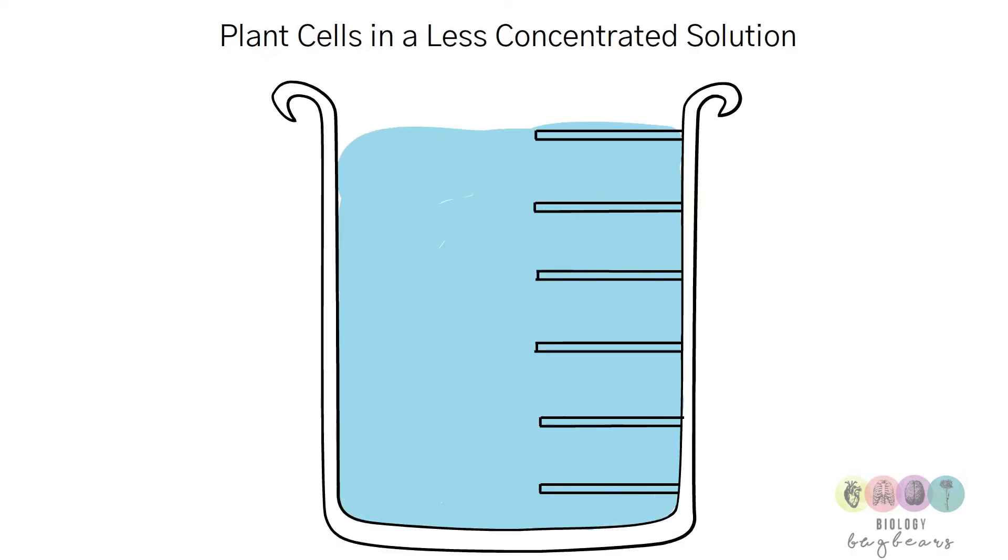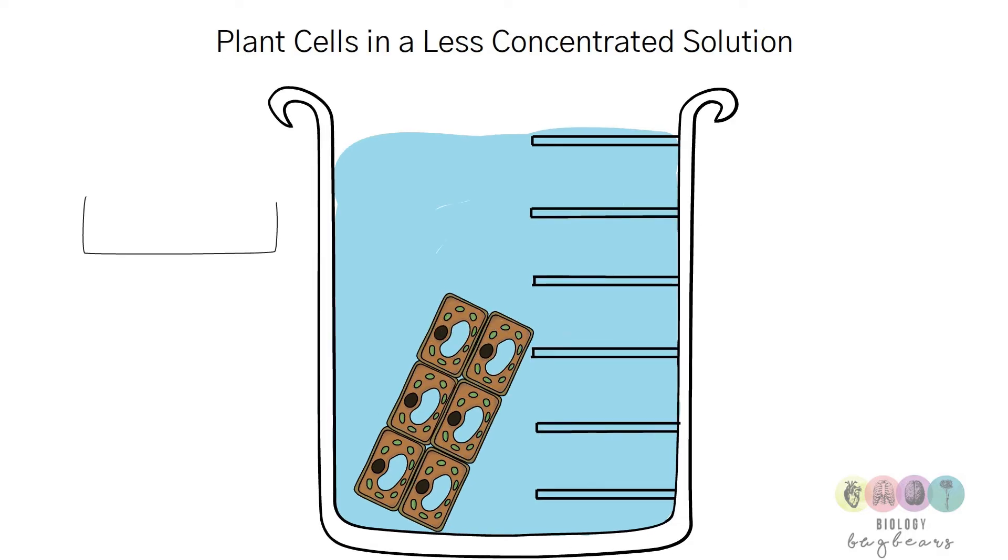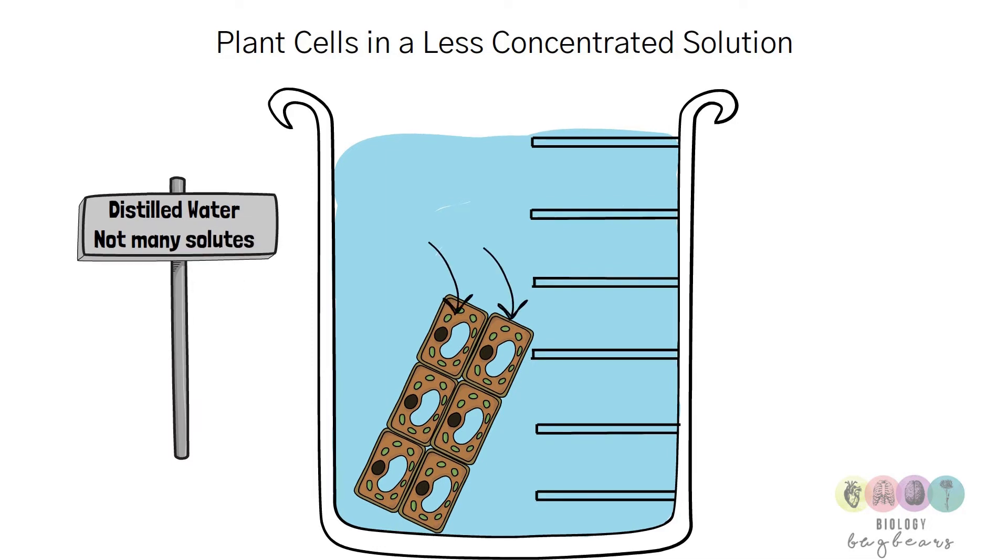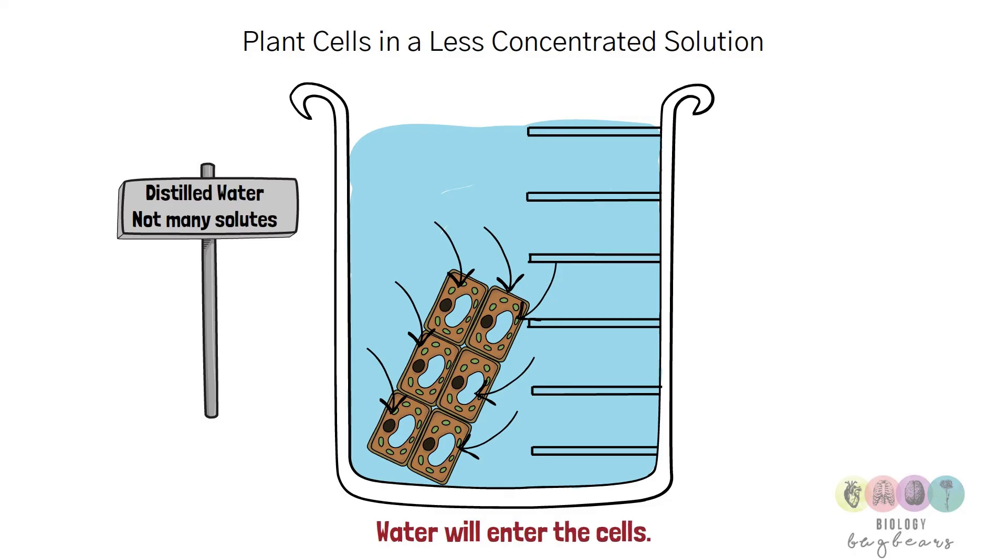So what happens in plant cells when you place plant cells in a less concentrated solution like a very watery solution like distilled water? In this case there will be very pure water and not very many solutes, so water is going to move where there's lots of it in the beaker into the cells to where there's less of it, so water enters the plant cells.